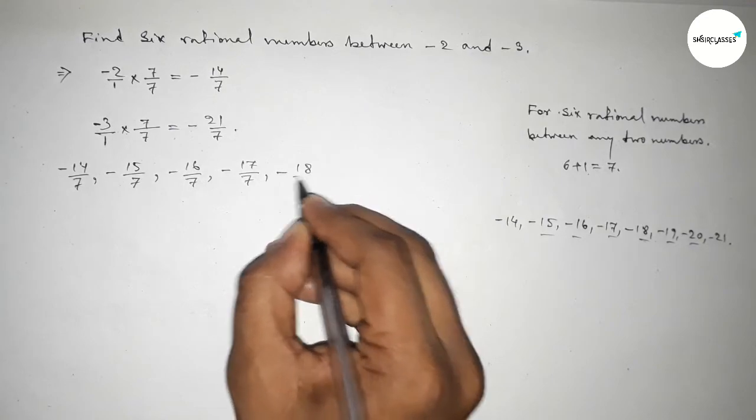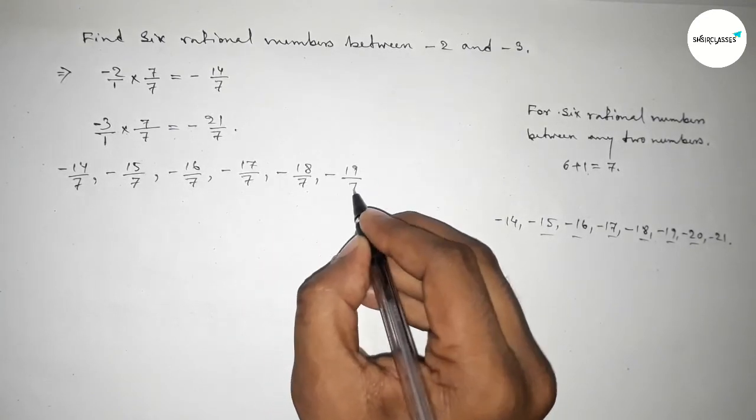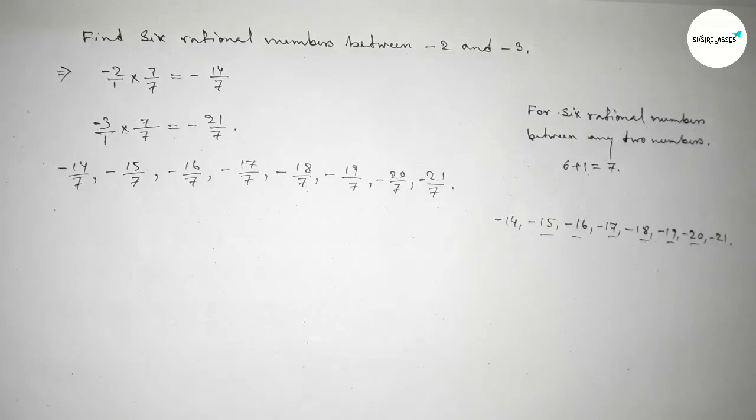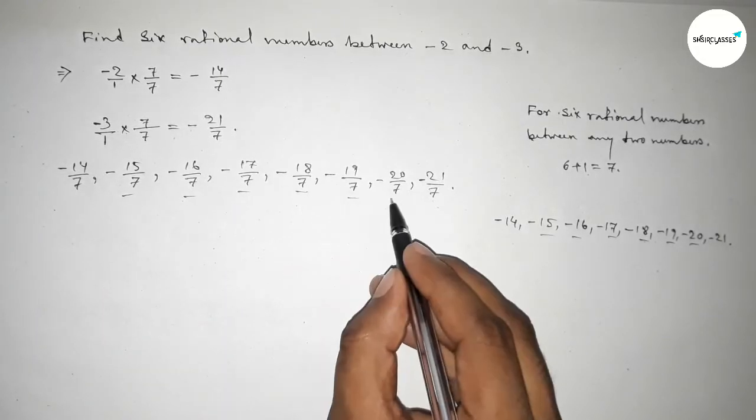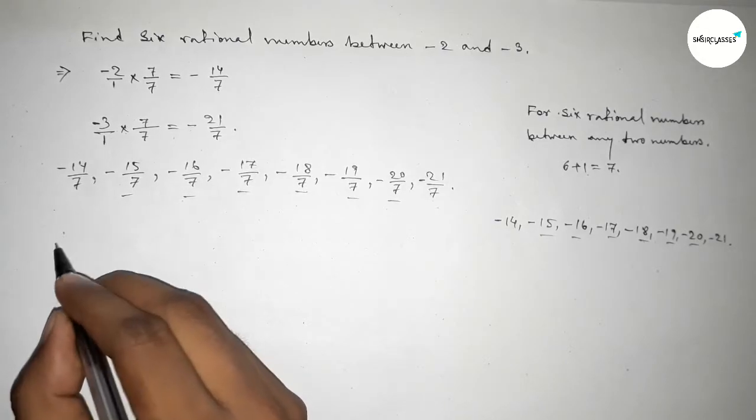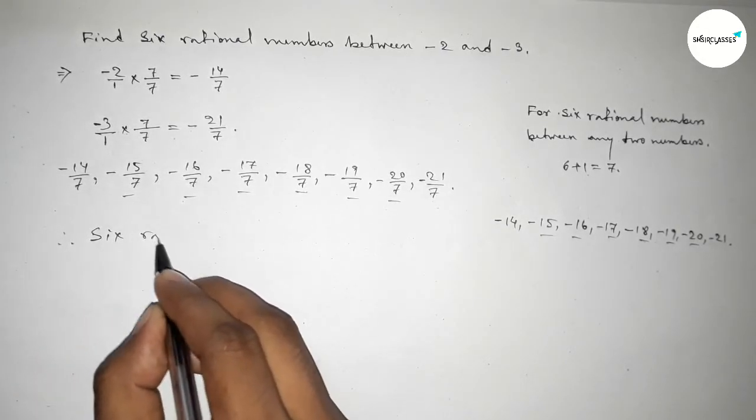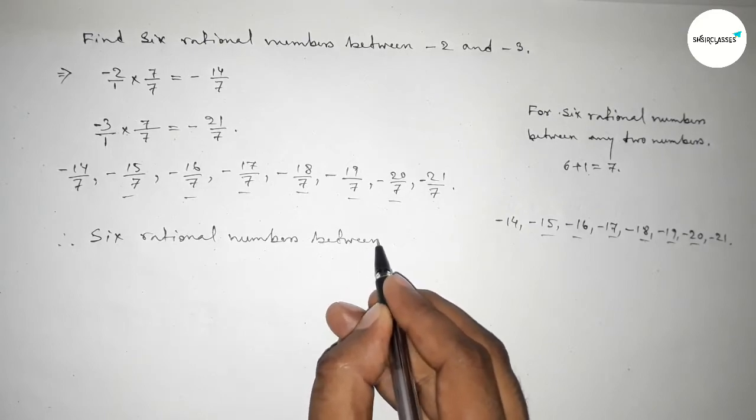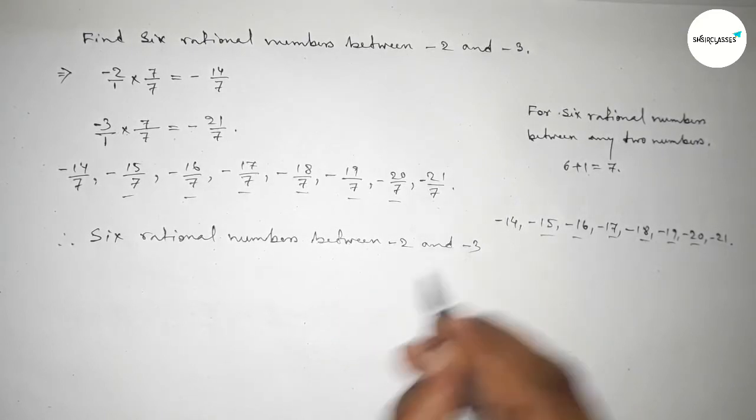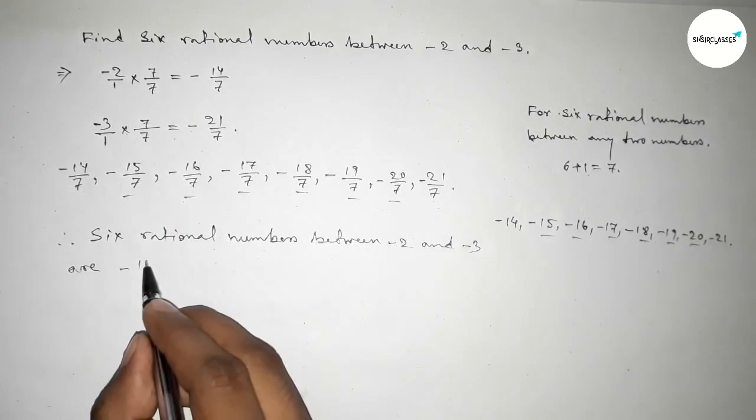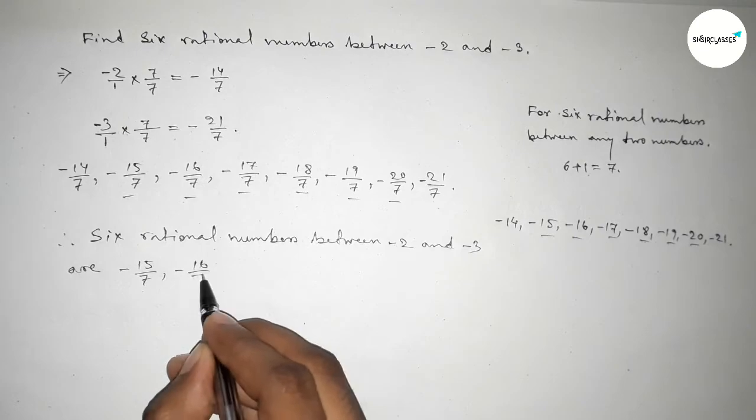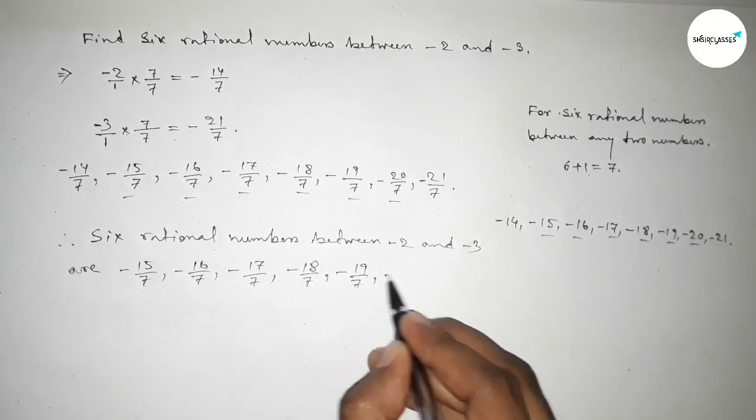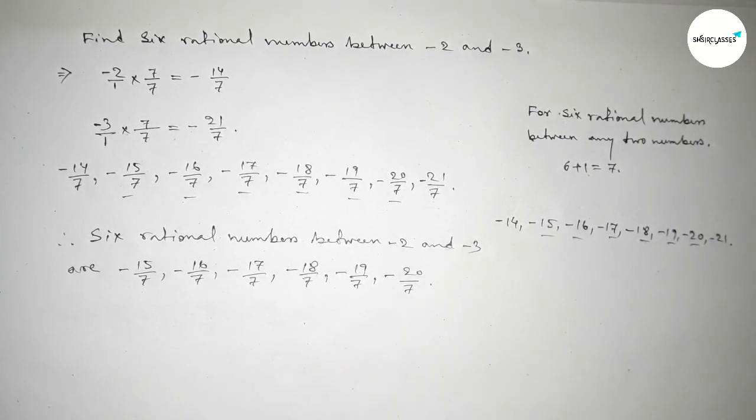And these are the required six rational numbers. Therefore, the required six rational numbers between minus 2 and minus 3 are minus 15 over 7, minus 16 over 7, up to minus 20 over 7. So these are the required six rational numbers between minus 2 and minus 3.